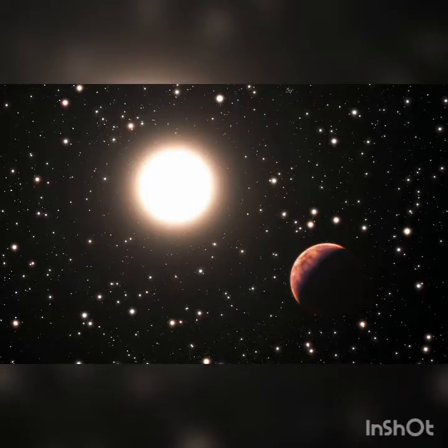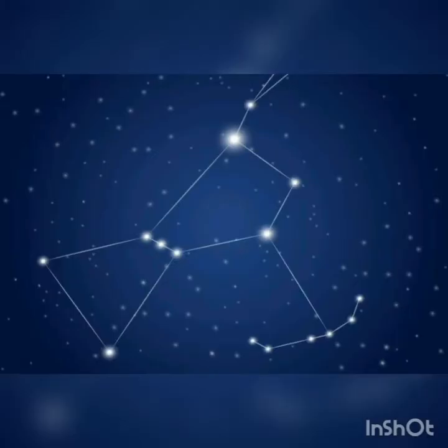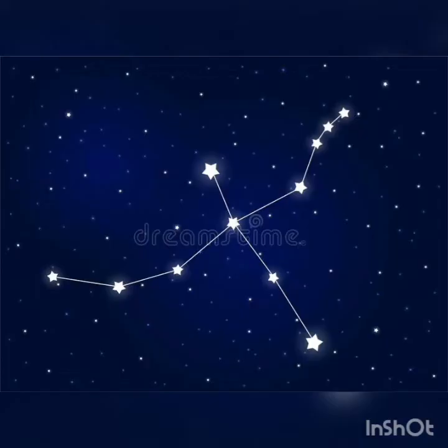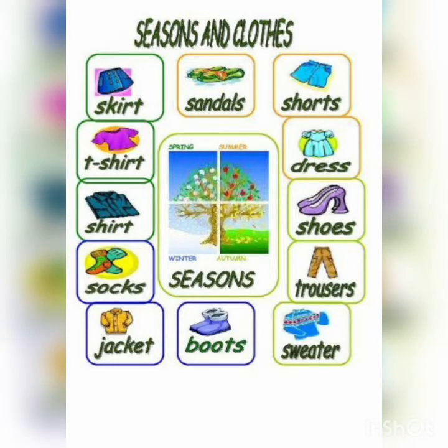At night, we see many stars shining in the sky. There are different kinds of stars — some are big, some are small. Can you answer why some stars look small? Drop your answer in the chat box. A group of stars that form a pattern in the sky are called a constellation. With this, Chapter 3 is finished and now we will start the next chapter: Seasons and Clothes.